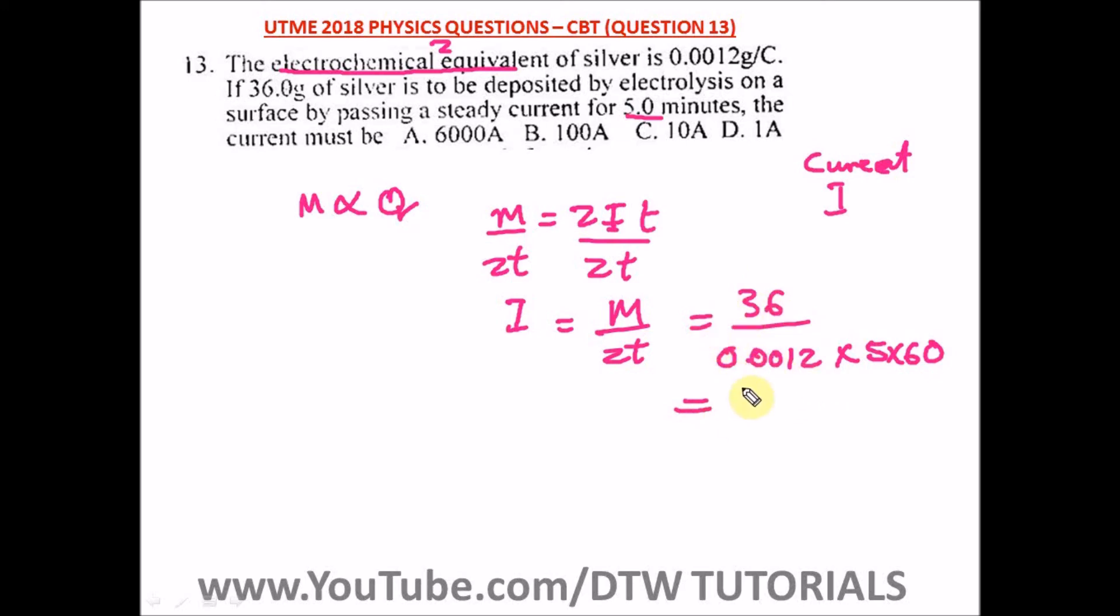So our current is 100 amps and our right option here is option B.